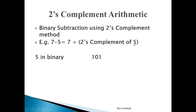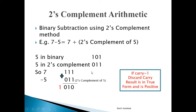First, find the 2's complement of 5. Five in binary is 101. Its 2's complement, found by the direct method, is 011. Now perform 7 − 5: 7 is 111, and we add the 2's complement of 5 which is 011. The addition gives result bits 0, 1, 0 with a carry of 1.